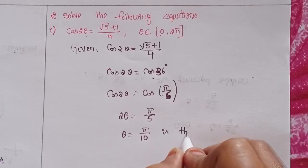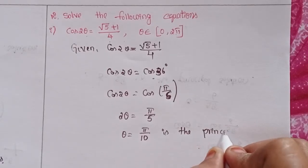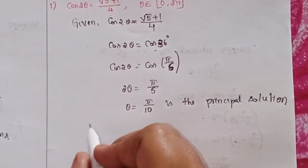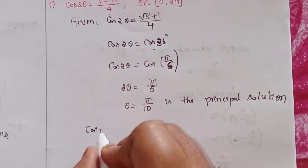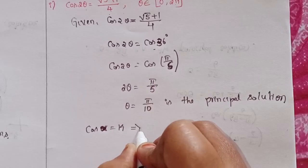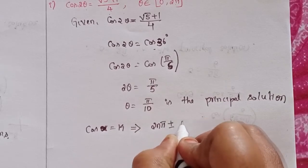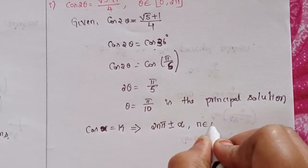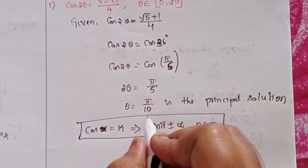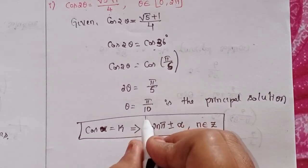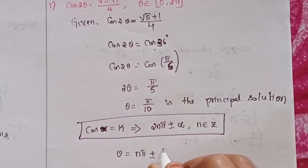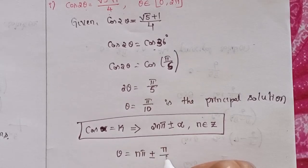θ = π/10 is the principal solution. Next, we know the general solution: if cos x = k, the general solution is 2nπ ± α, where n belongs to Z. Here α = π/10, so the general solution for 2θ is 2nπ ± π/10.